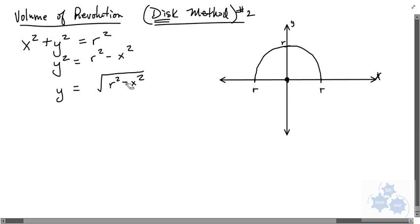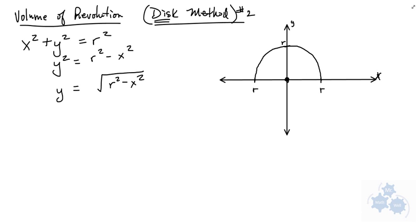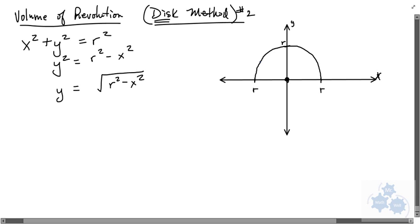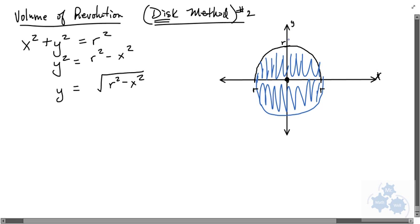Now we want to get rid of this negative version because we don't care about the part underneath. So we'll just change that to positive. That's what this equation is, y equals root r squared minus x squared. I'm going to keep r in there because what I want to do is find out the formula for the volume of the revolution of this semicircle.